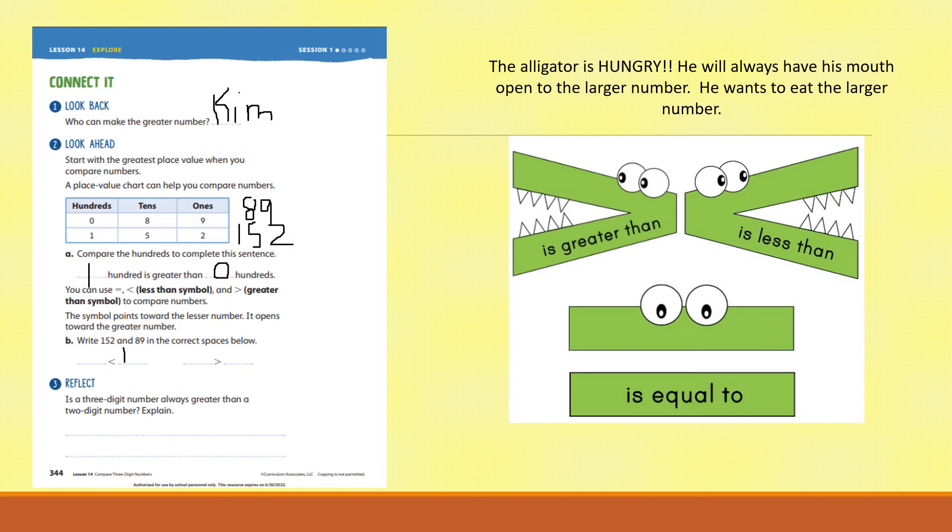Because one hundred and fifty-two is greater than eighty-nine. So, now, I'm going to read this as eighty-nine is less than one hundred and fifty-two.